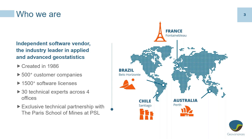In the early 90s we released our first software product, called Isatis, which has been an industry standard ever since. In the past few years we've introduced a new version. We have over 500 customers, over 1500 software licenses around the world, and employ 30 technical experts across four offices. We maintain a technical partnership with the Centre for Geostatistics at the Paris School of Mines, Paris Science et Lettres University.